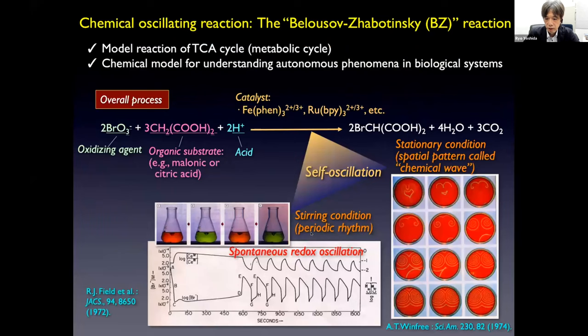To design such autonomous systems, we utilized the chemical oscillating reaction called the BZ reaction. The BZ reaction is very famous as a model reaction of the TCA cycle, the metabolic cycle in living systems. This reaction is a chemical model for understanding autonomous phenomena in biological systems. The overall process involves oxidizing agents, organic substrate acids, and catalysts. The metal catalyst shows autonomous redox changes and demonstrates a physiological rhythm — spontaneous redox oscillation.